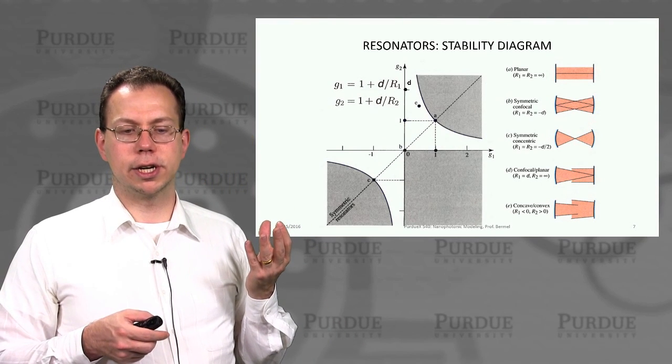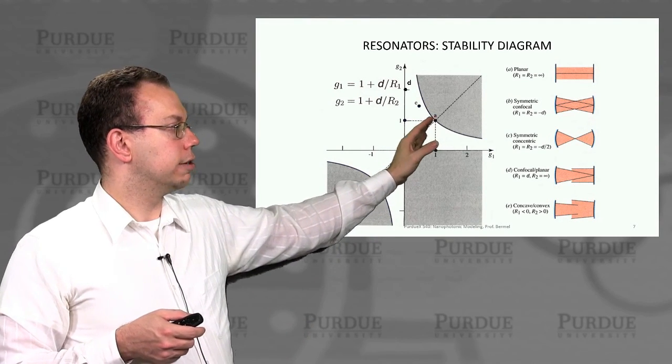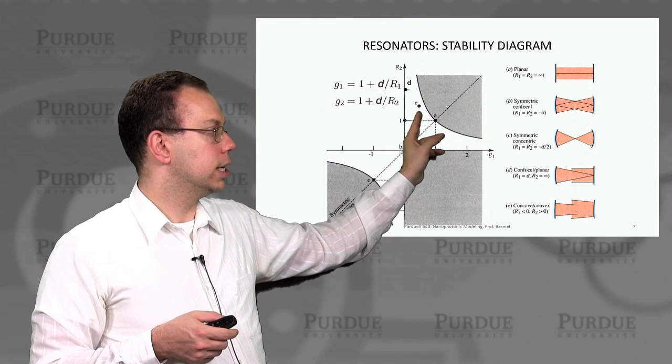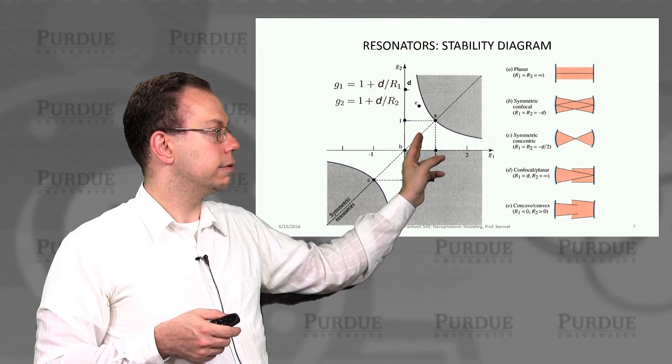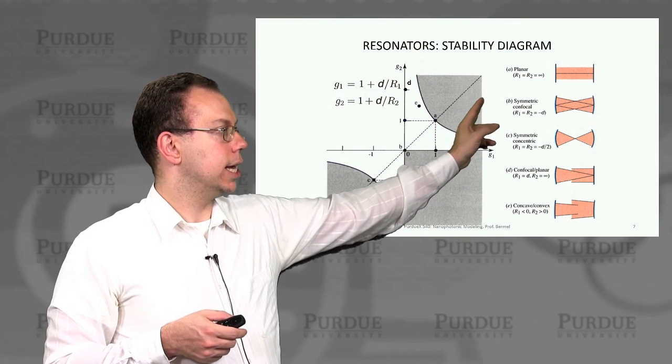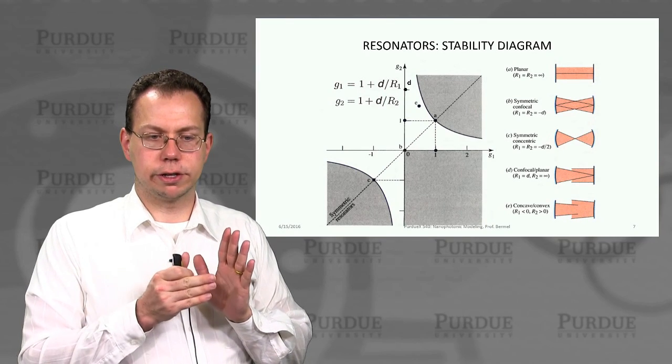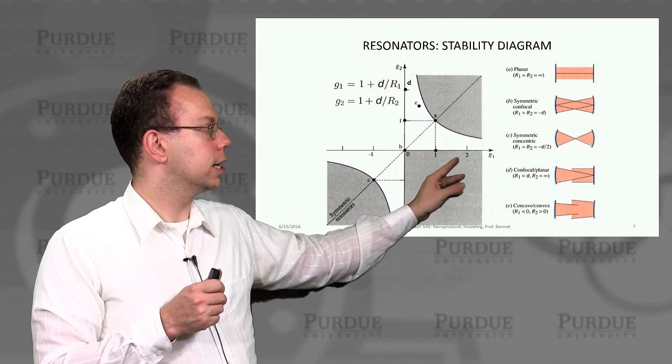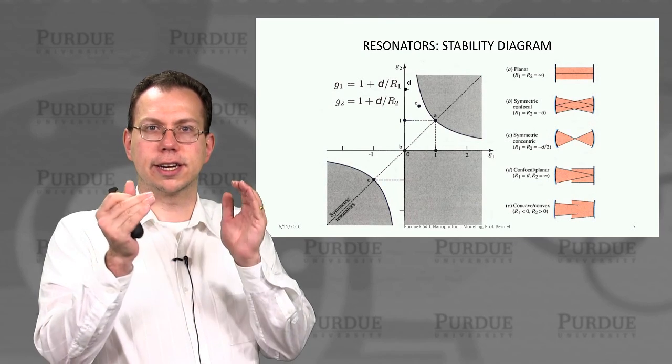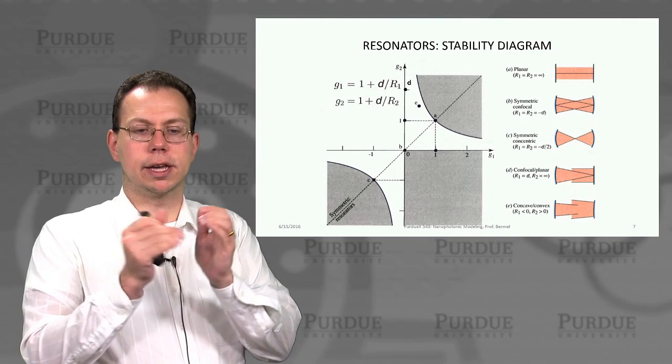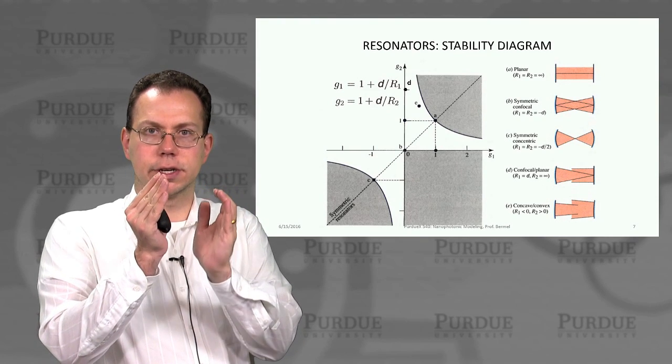There's a stability diagram that you can generate for this sort of problem. Certain types of mirrors are going to be fairly stable. If G1 and G2 are both kind of like 1 or less, that's the case of the planar mirror, then we can have a very good fit and keep light going back and forth. Similarly, in the case of a symmetric concentric mirror, these mirrors are facing towards each other and they're focusing light on one another, so the light won't escape. It can keep bouncing back and forth. You could also have one mirror that's flat and then one is curved, so it's kind of in between those two cases.